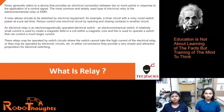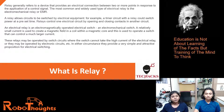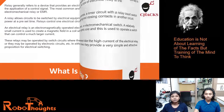An electrical relay is an electromagnetically operated electric switch — an electromechanical switch. A relatively small current is used to create a magnetic field in a coil with a magnetic core, and this is used to operate a switch that can control a much larger current. These relays may be operated by switch circuits or by electronic circuits, providing a very simple and attractive proposition for electrical switching.